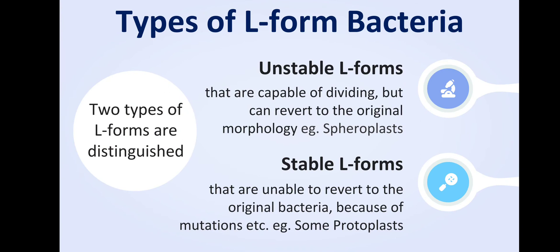L-form bacteria are distinguished into two types. The first is unstable L-form bacteria, which are capable of dividing but can revert to the original morphology — spheroplasts are an example, as they retain two membranes. The second type is stable L-forms, which are unable to revert to the original bacterial form due to mutations.